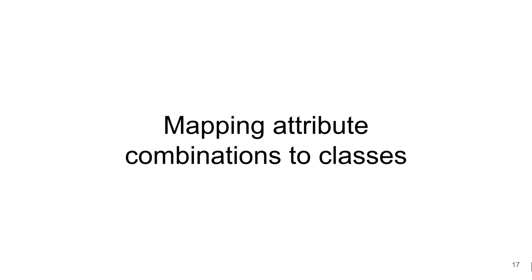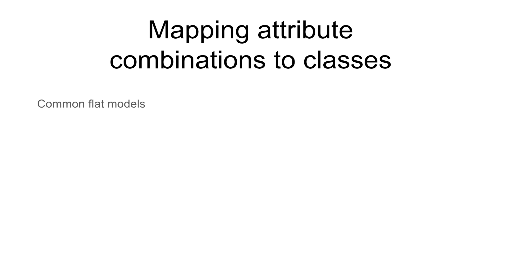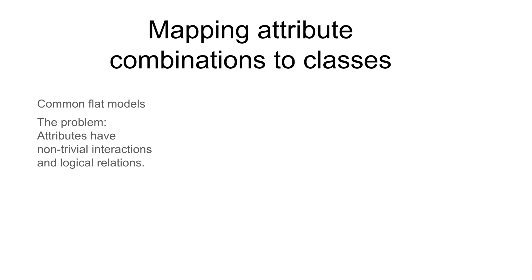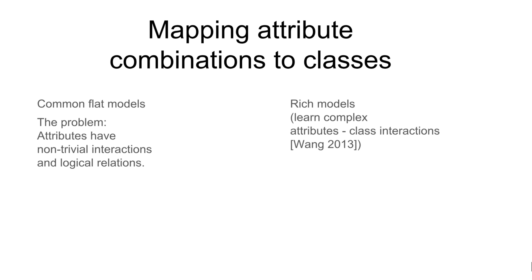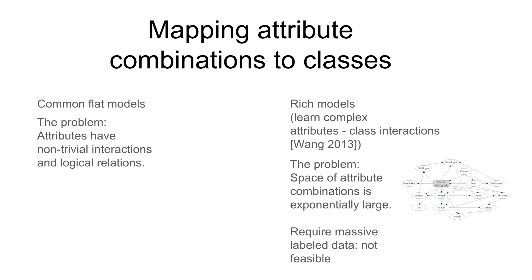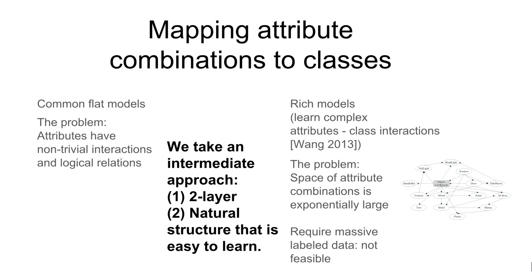Now, the trick is in how to map attribute combinations to classes. One common way is to take a flat approach that treats all attributes equally. But such models ignore complex interactions between groups. On the other hand, we can learn a rich model that accounts for complex interactions, but fitting such a model requires a lot of training data. We take an intermediate approach and impose a simple two-layer structure that is natural for this type of data and is easy to learn.